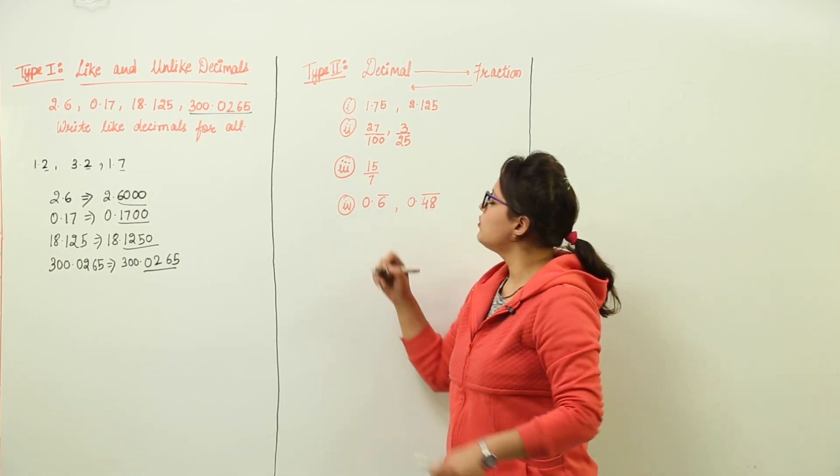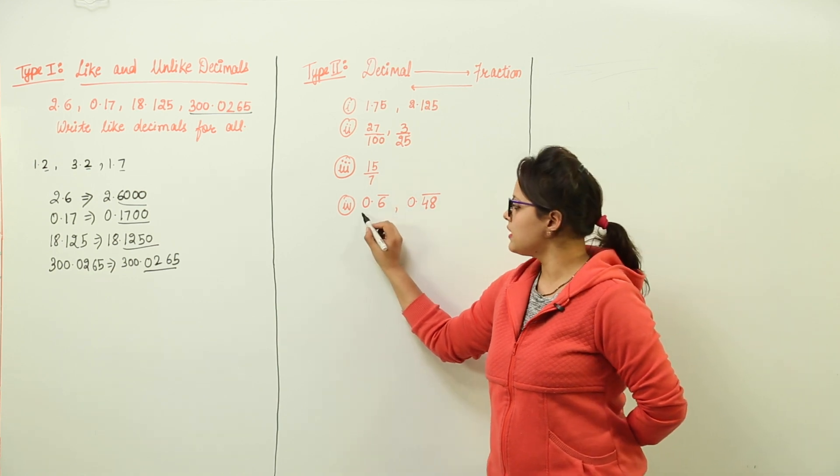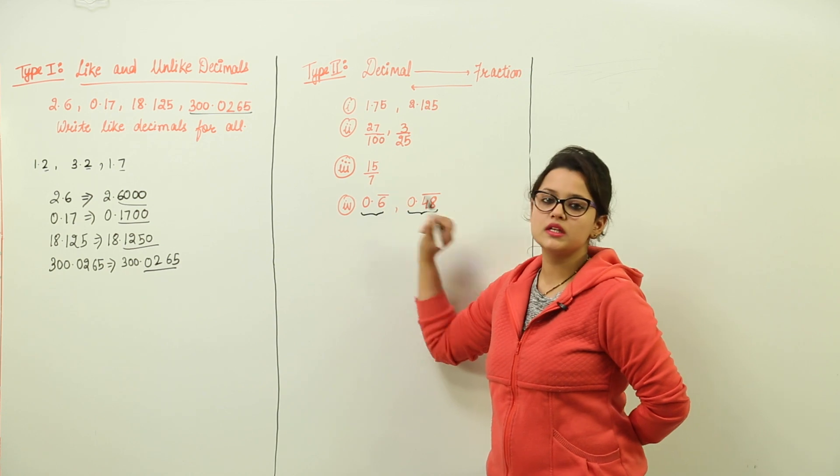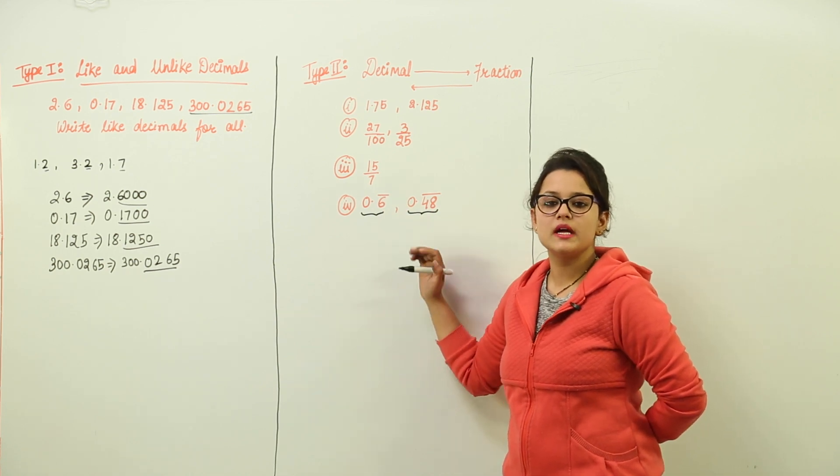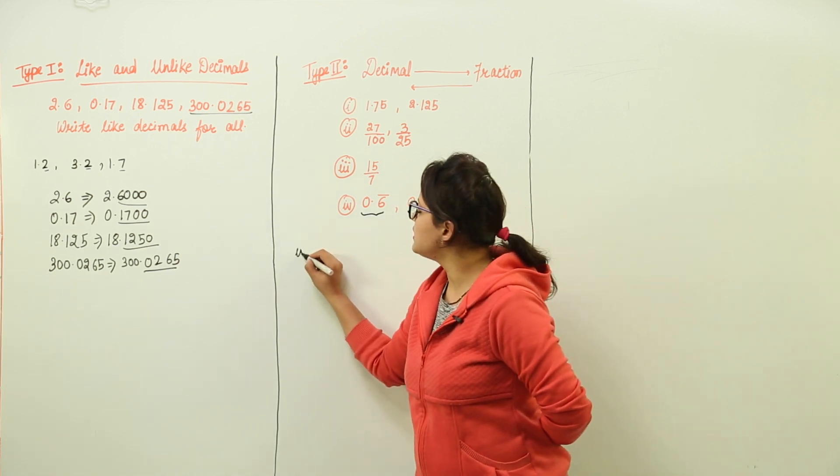The fourth part is you have to convert this decimal into fractions. Now please pay attention on these decimals. These decimals are having a bar on their digits. The bar represents that these digits are getting repeated. So what we do for these?